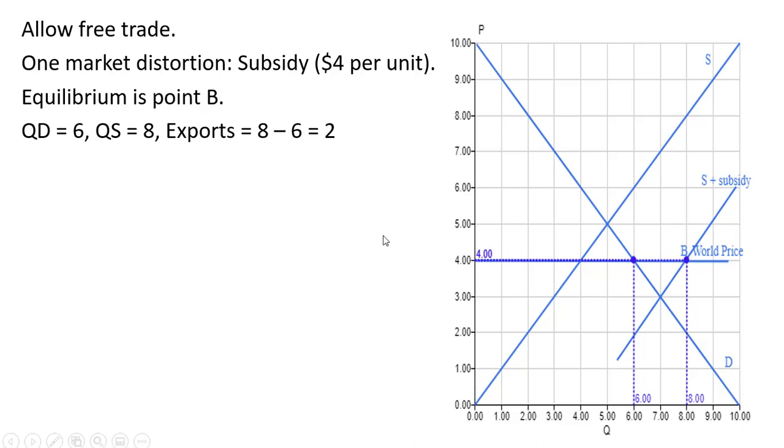That's the quantity demanded. Domestic sellers will sell eight units. That difference between eight and six is the amount of exports. So the sellers here will be selling two of their units in international markets.